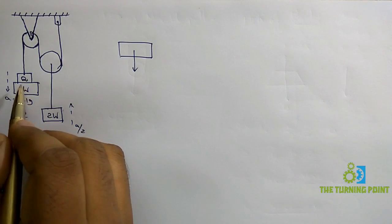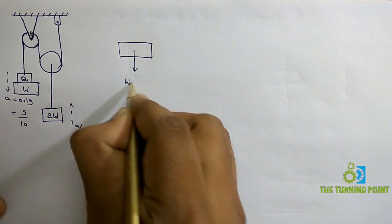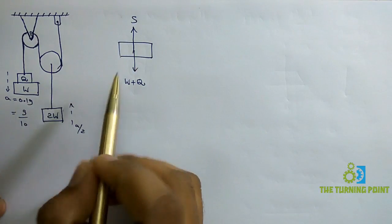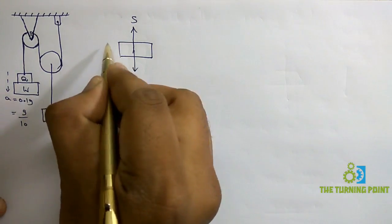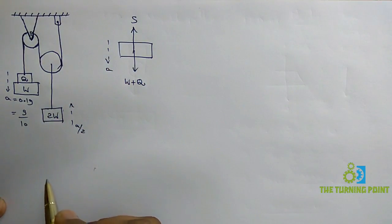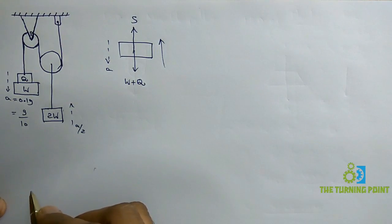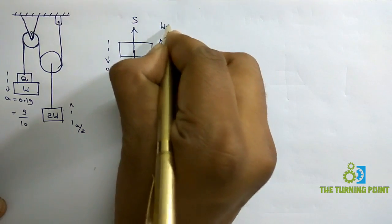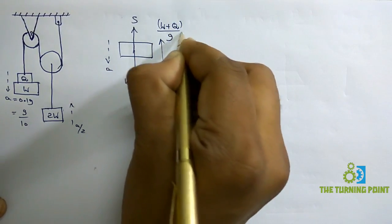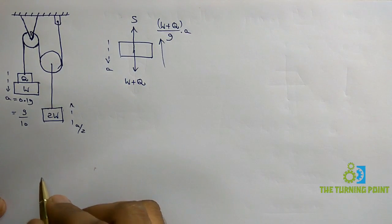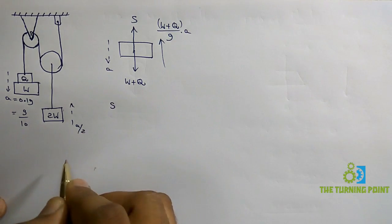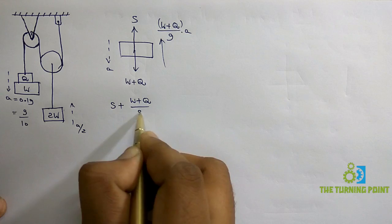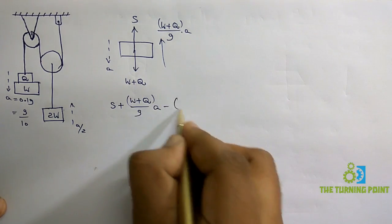W is the weight of this block and Q is the weight of that block. When we combine these two, the total weight is W plus Q. Along the string, let S be the tensile force — represented away from the object. It is given that the block has a downward acceleration A, so in the opposite direction it will have an inertia force, which is mass times A, or (W plus Q)/G times A.